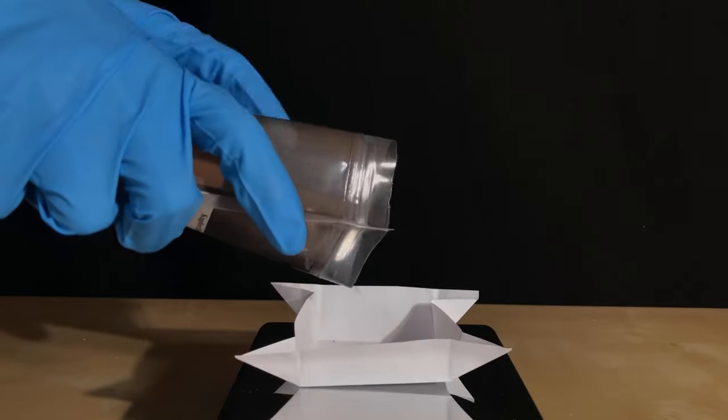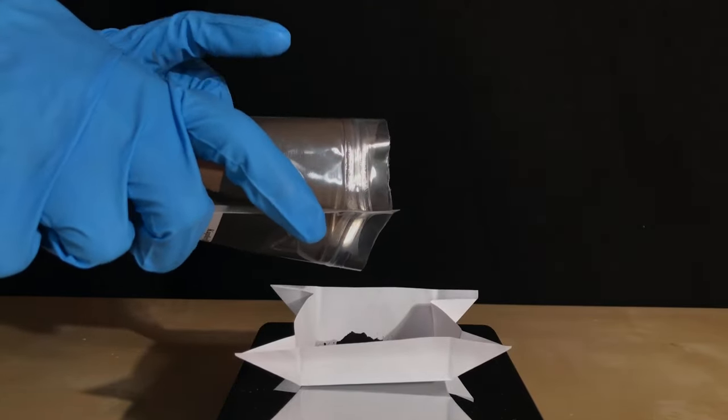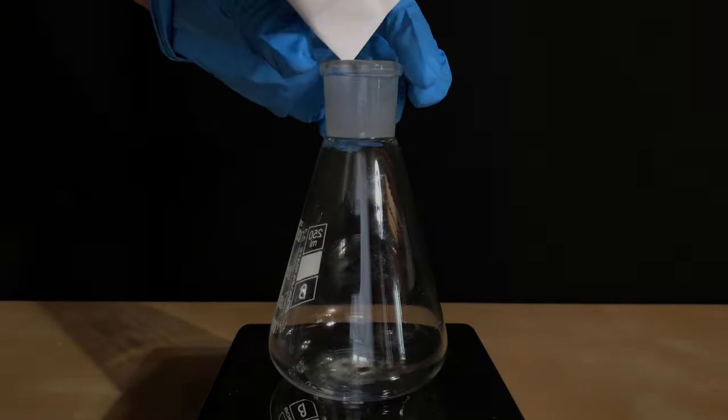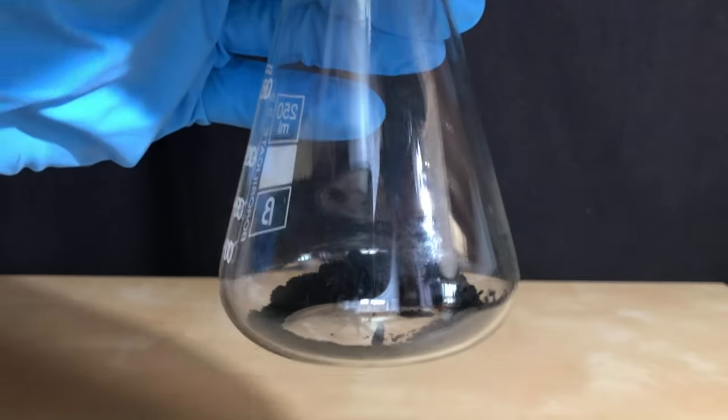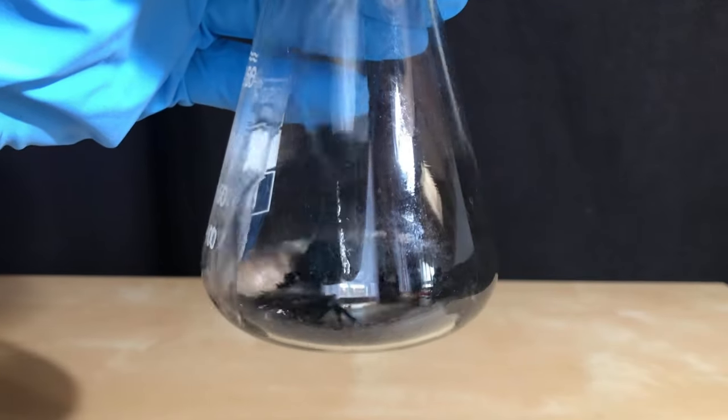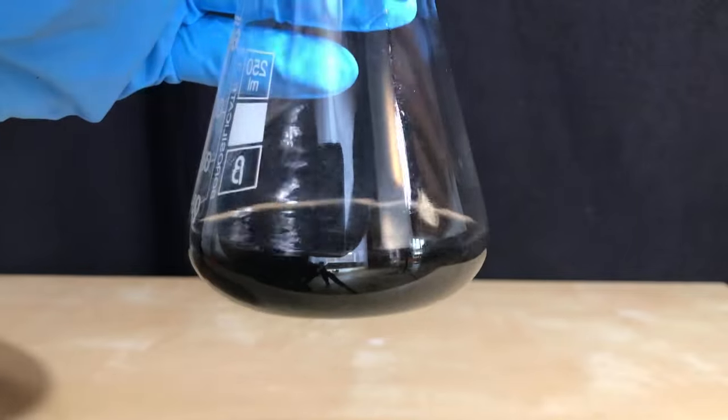The copper 2 oxide, which is a black powder, was weighed out next. 8 grams of this chemical were used. The copper oxide was added to a 250 milliliter Erlenmeyer flask. If I repeated this preparation, I would use a 500 milliliter one. About 15 milliliters of distilled water were added.